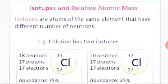Regarding isotopes and relative atomic mass: isotopes are atoms of the same element that have the same atomic number but different atomic masses, due to a different number of neutrons. For example, chlorine has two isotopes — both with atomic number 17, but with masses of 35 and 37.